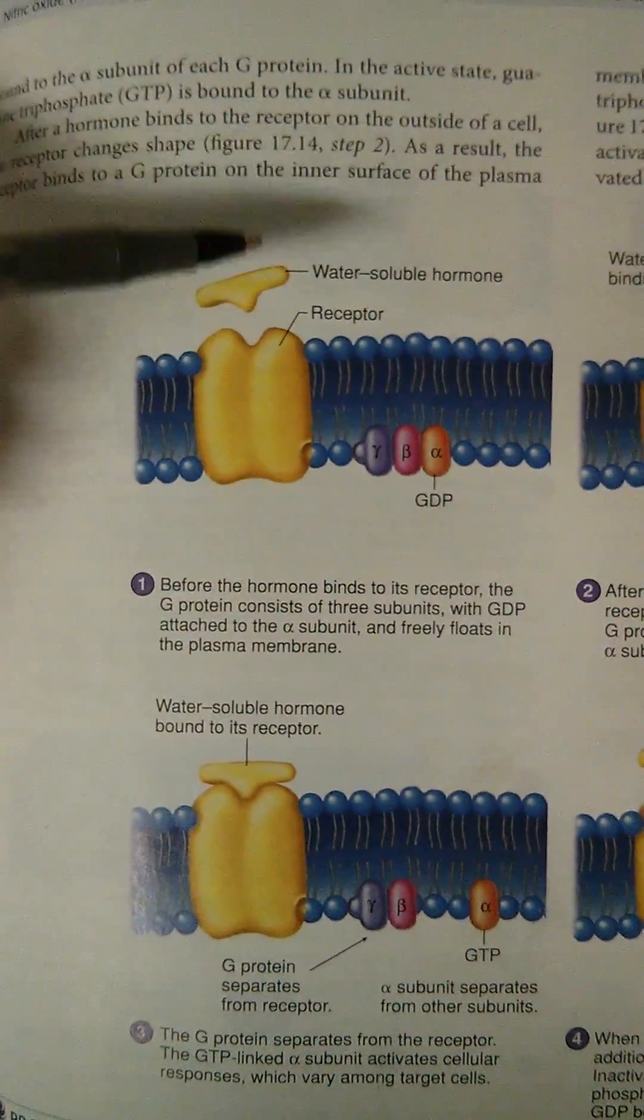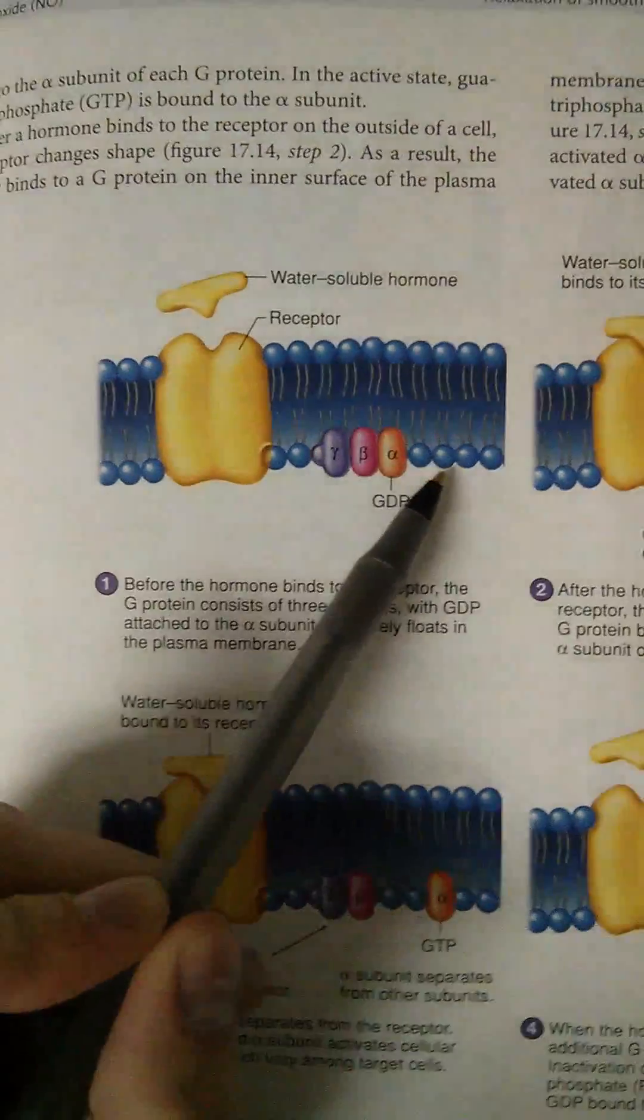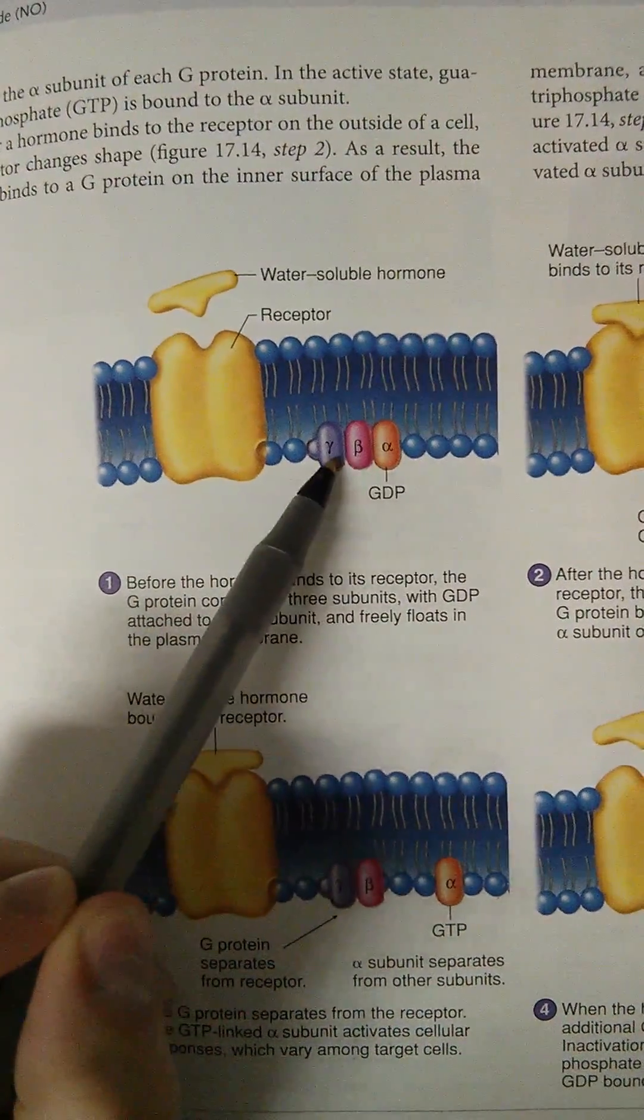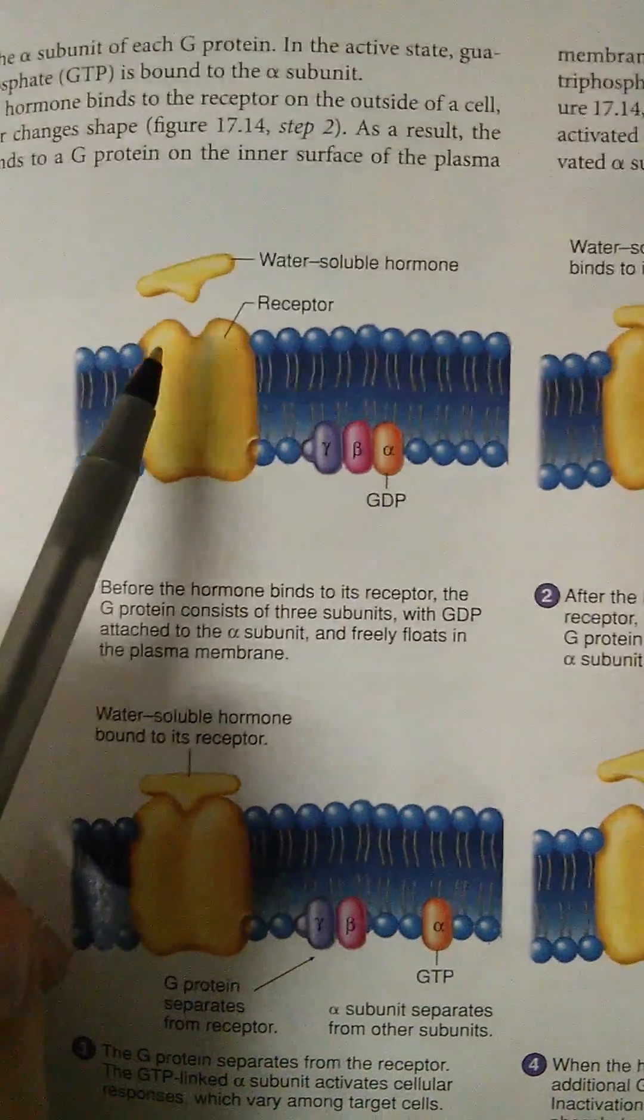So again, we see the water-soluble hormone binding to the receptor, and here it is, the actual names, the alpha, beta, and the gamma. And so what happens is once it's activated,